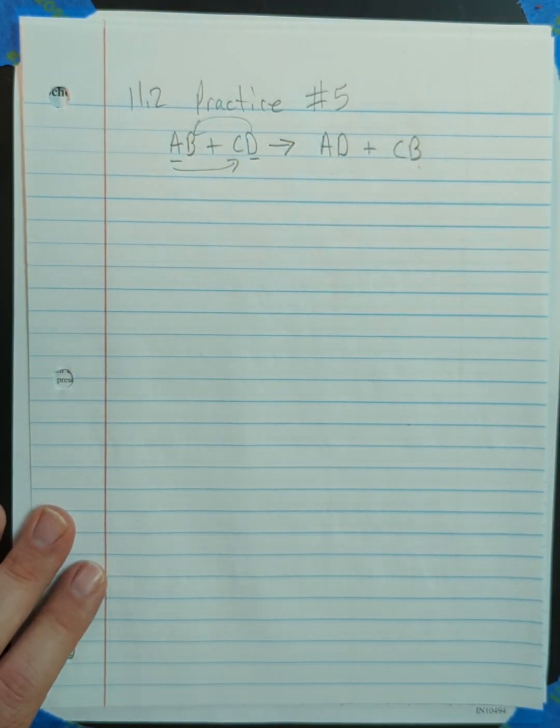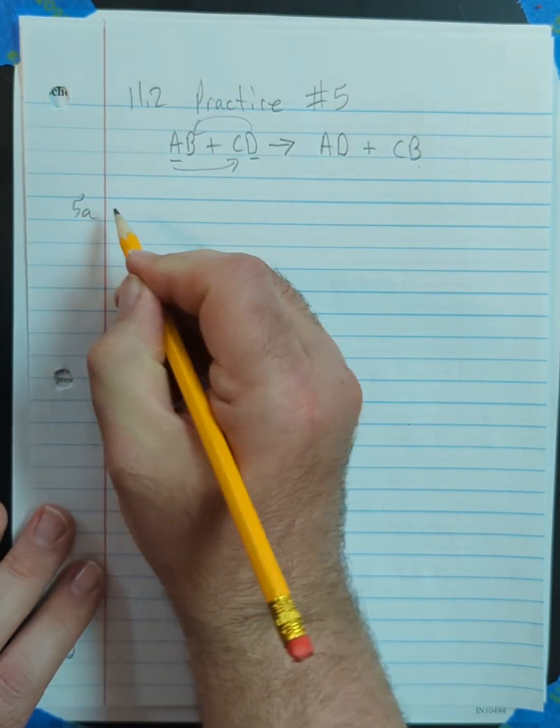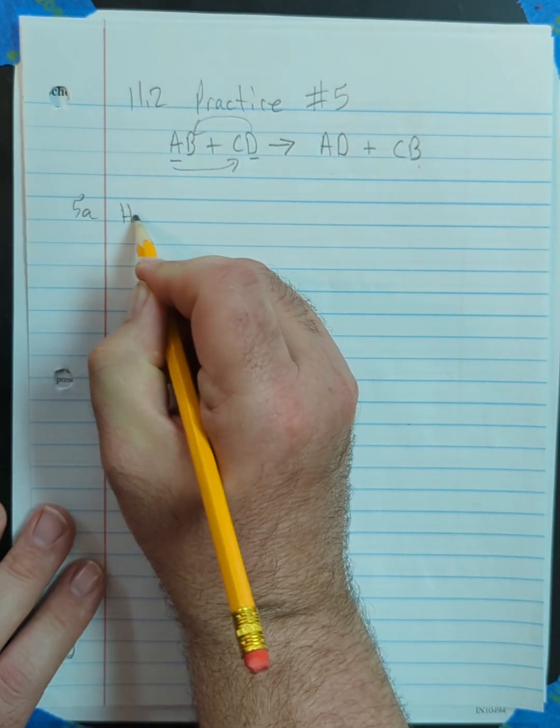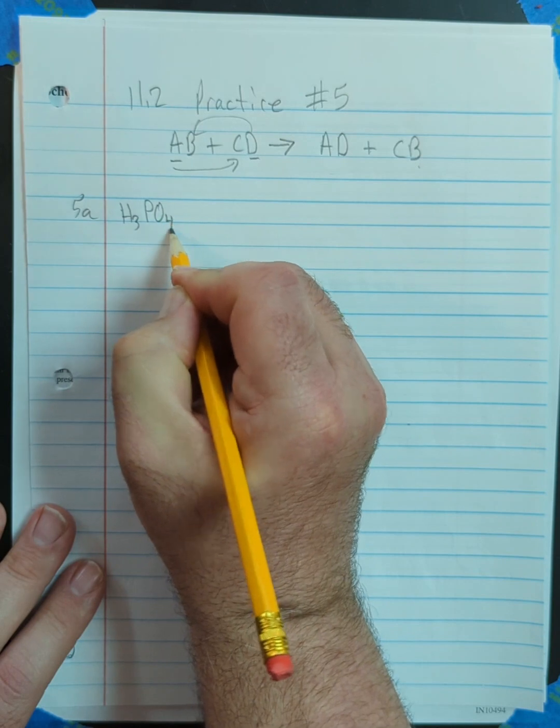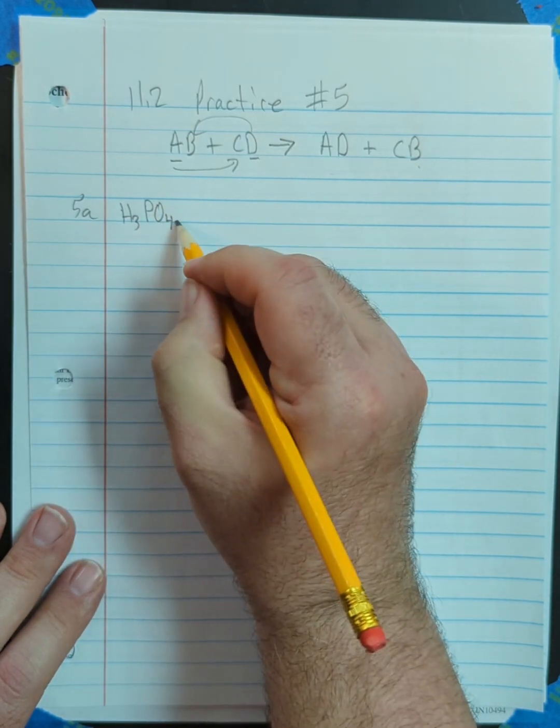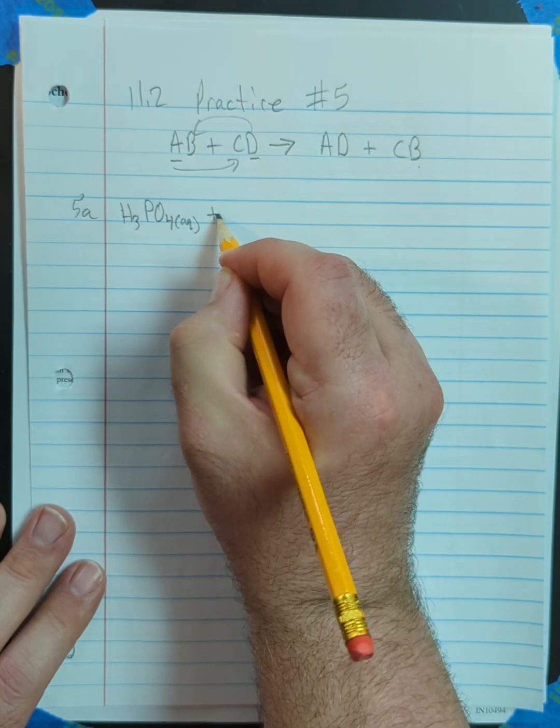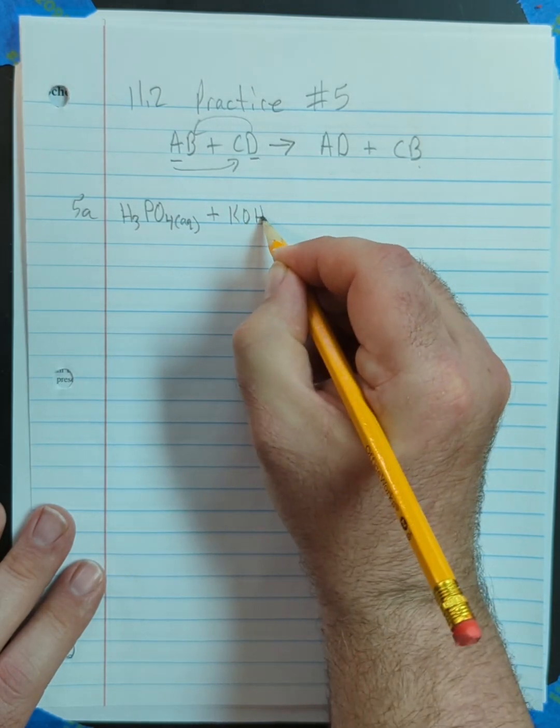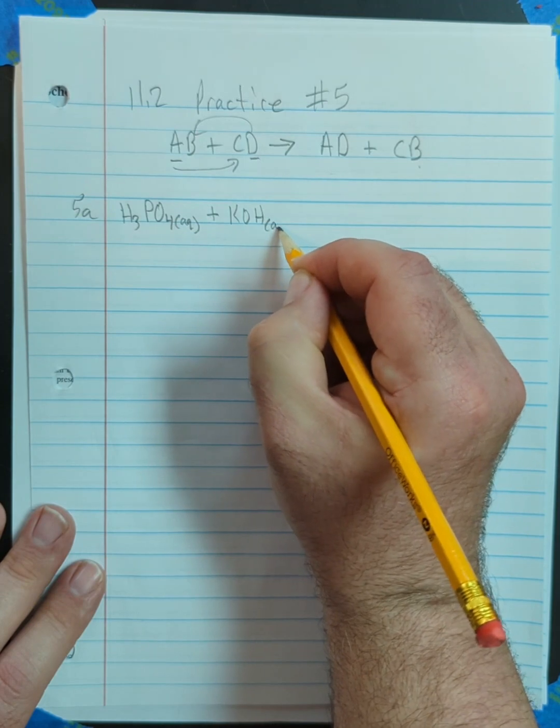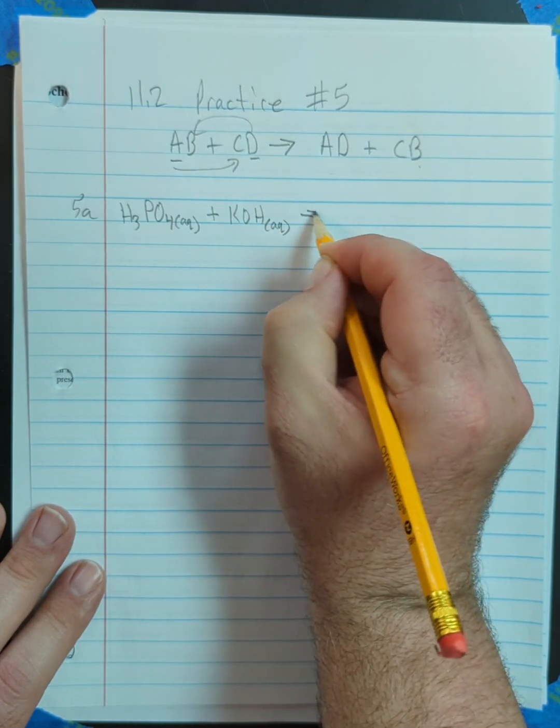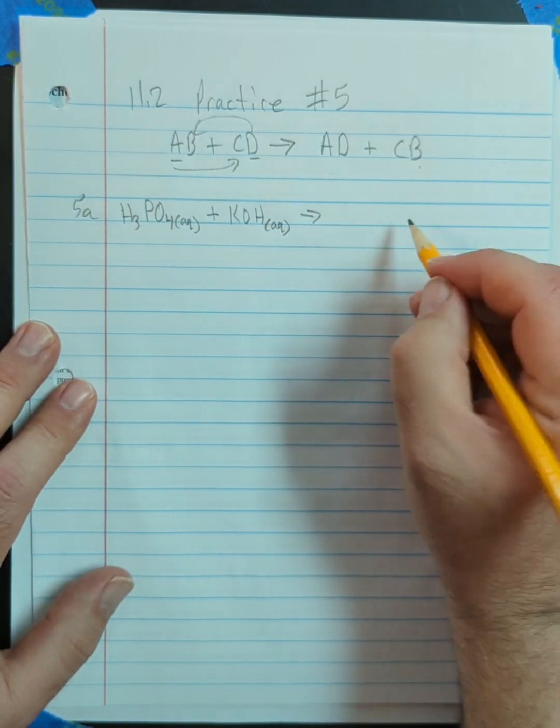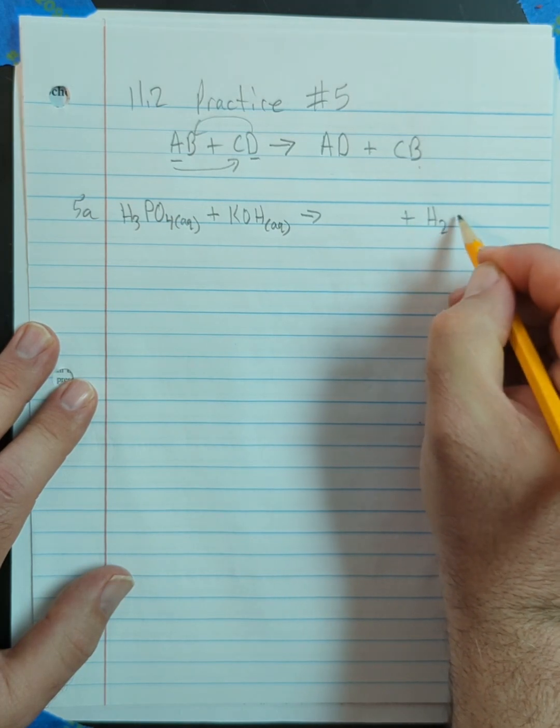All right, so 5A gives us H3PO4 aqueous plus KOH aqueous produces. Now, it tells us that water is formed.